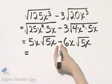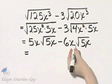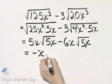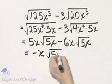Let's go ahead and simplify further. What is 5x minus 6x? That is negative 1x or negative x square root of 5x.